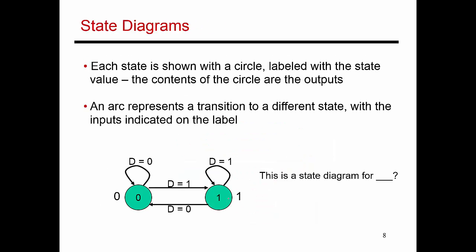Let's look at a couple of examples. What I have over here is the circuit for what is referred to as a one-bit saturating counter. When I get an input of one, I increment the counter. When I get an input of zero, I decrement the counter. But once I've already hit my maximum value, which is one, incrementing any further keeps me at a one. And if I'm at a zero and try to decrement any further, I stay at a zero. That's what the saturating means.